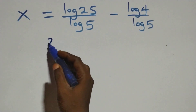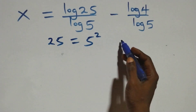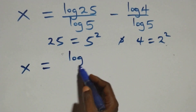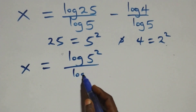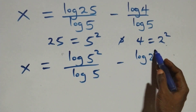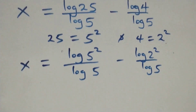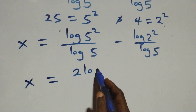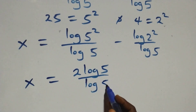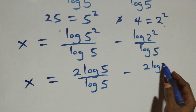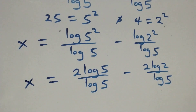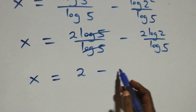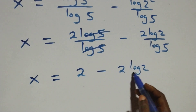We can express 25 as 5 squared and 4 as 2 squared. So x equals log(5²) over log 5 minus log(2²) over log 5. Applying the power rule of logarithms, the 2 comes down: x equals 2 log 5 over log 5 minus 2 log 2 over log 5. Log 5 cancels, leaving x equals 2 minus 2 log 2 over log 5.